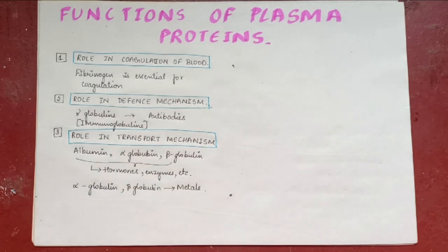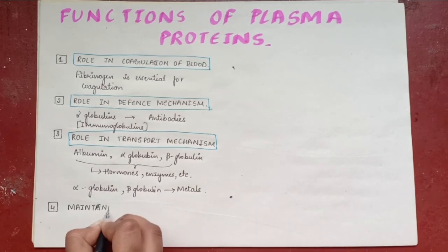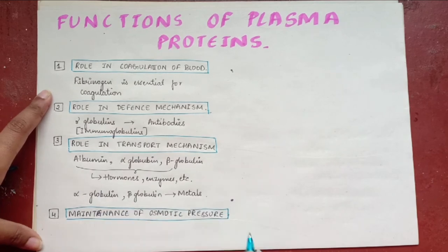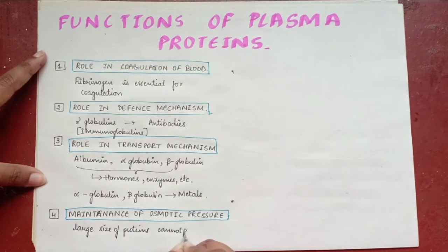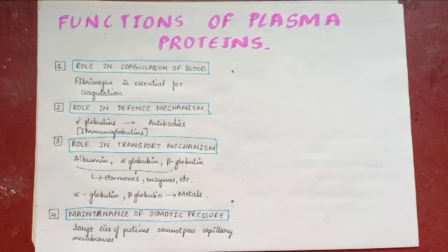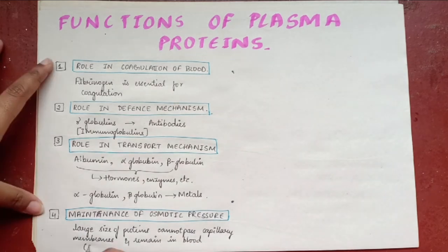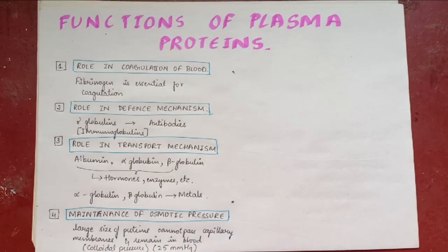Fourth function. Role in maintenance of osmotic pressure in blood. Because of their large size, the plasma proteins cannot pass through the capillary membrane easily and remain in the blood. In blood, these proteins exert the colloidal osmotic pressure. So, that is 25 mm of Hg. Since the concentration of albumin is more, it exerts maximum pressure.